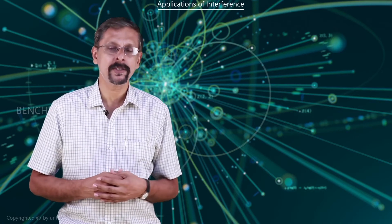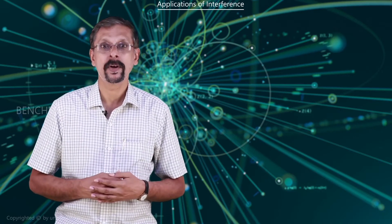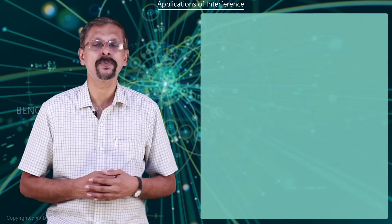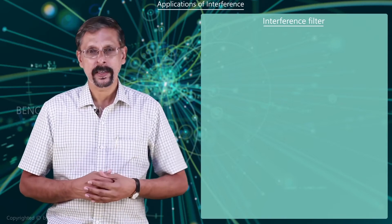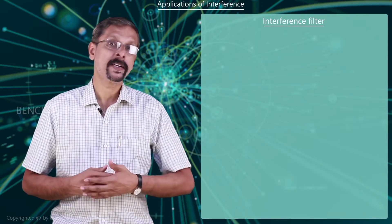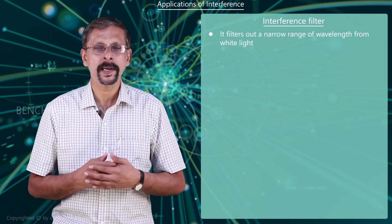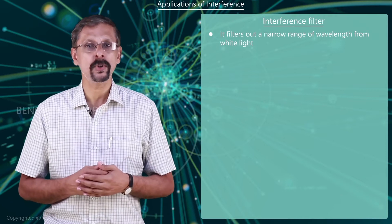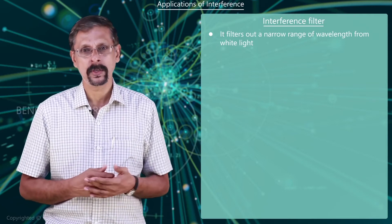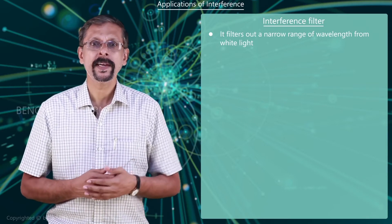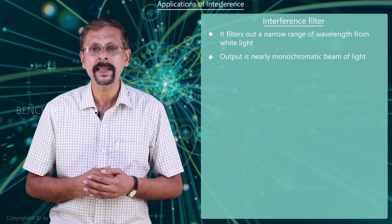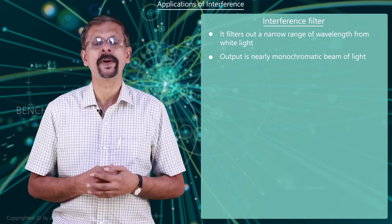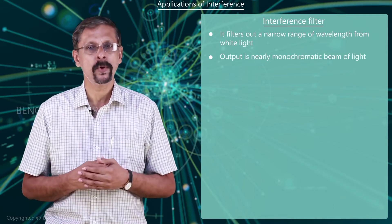About a second application of interference, known as the Interference Filter. An interference filter filters out a narrow range of wavelengths from white light, and hence the output is nearly a monochromatic beam of light.